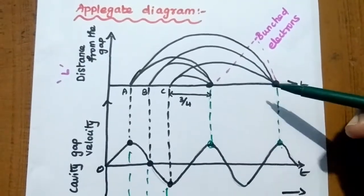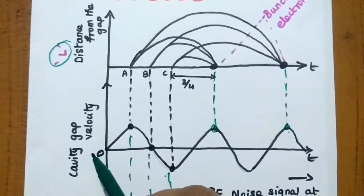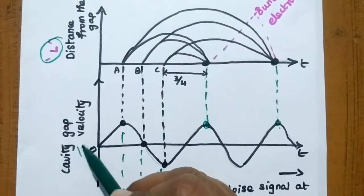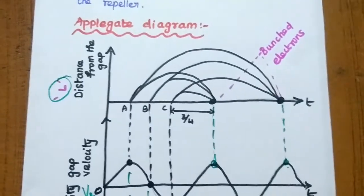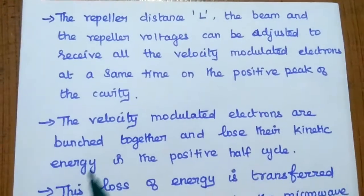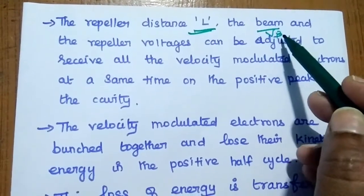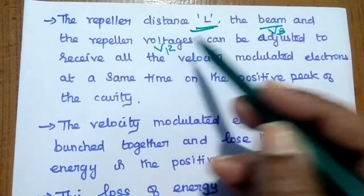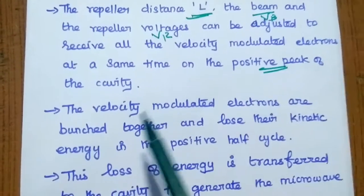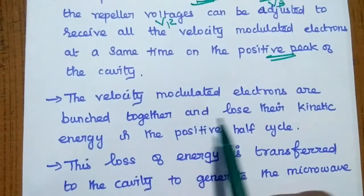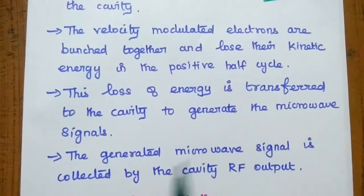There are different modes of oscillation available in the reflex klystron. The important parameters are: the repeller space, the cavity cap voltage, and the electron beam voltage. The repeller space, beam voltage VB, and repeller voltage can be adjusted so that all velocity-modulated electrons arrive at the cavity at the same time on a positive peak. The velocity-modulated electrons are bunched together and lose their energy in the positive half cycle, and this loss of energy is transferred to the cavity to generate the microwave signal.